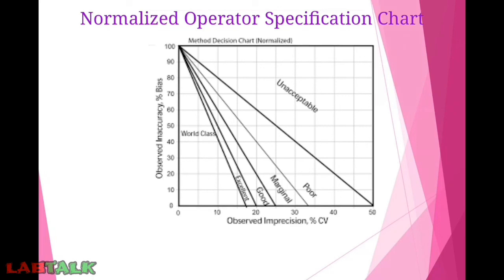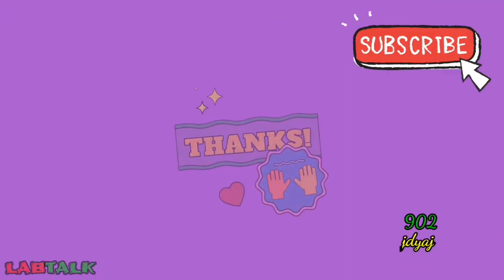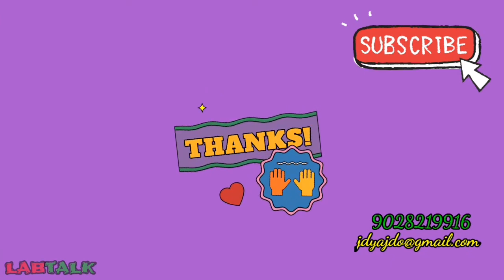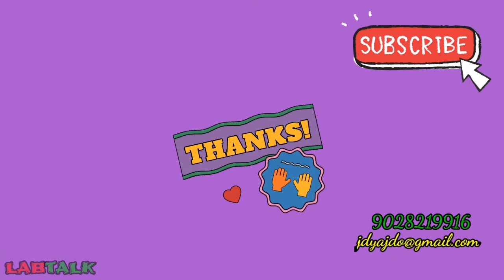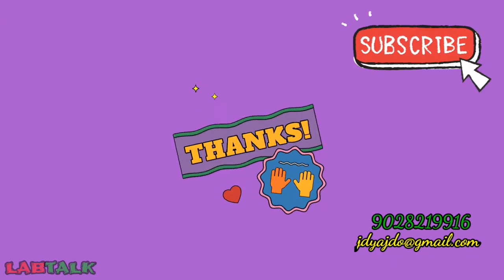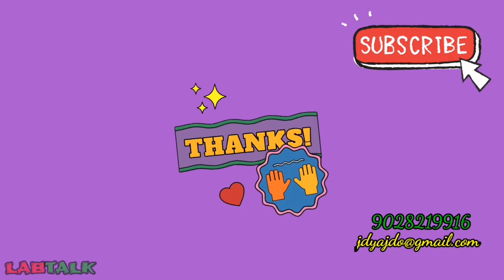We have taken the example for calculating the operating point on the normalized operator specification chart, or normalized OP spec chart. In the next part of this video we are going to see the power function graph and how to use this normalized operator specification chart. Keep following this video series for Six Sigma in Internal Quality Control. Thank you.